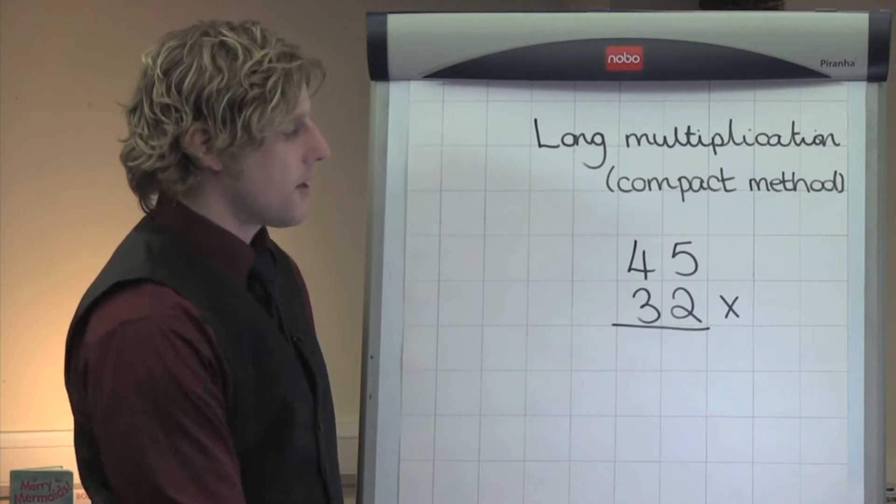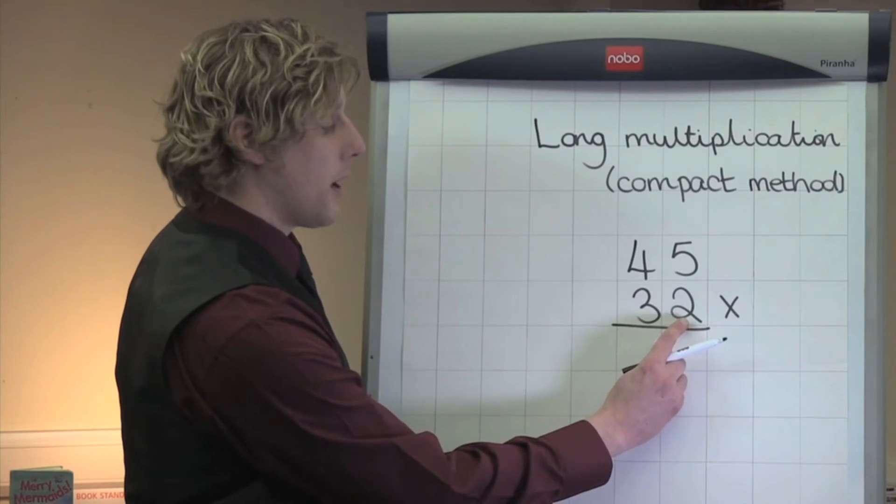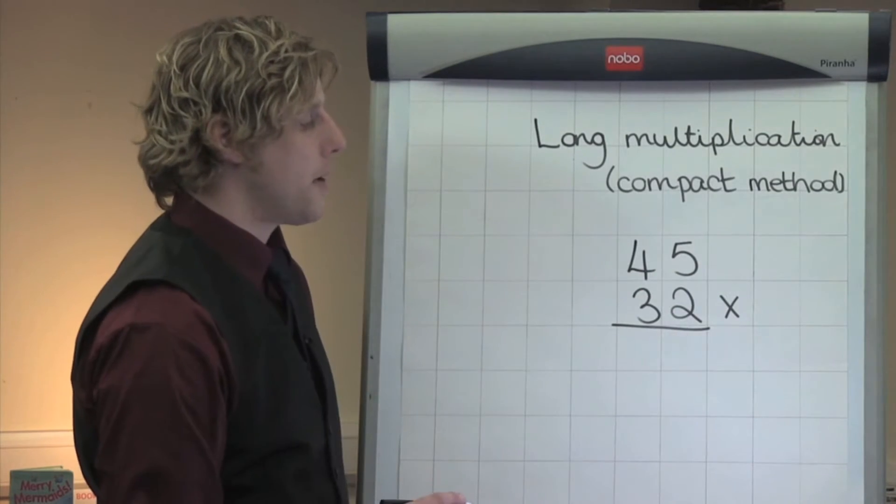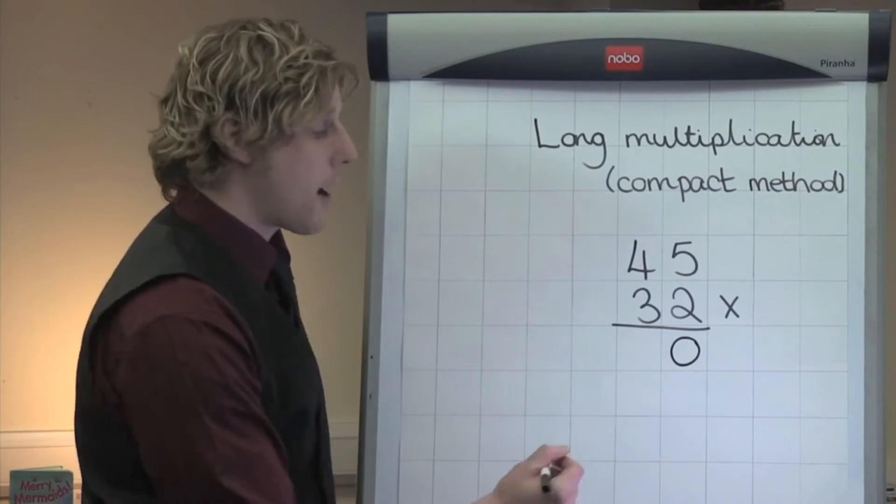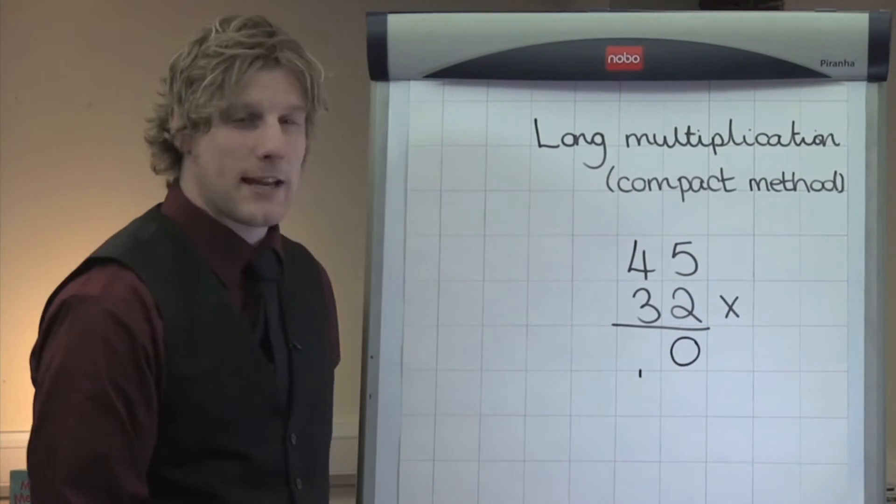To answer this, I'm starting with my two units and I multiply 2 by the 5 above. 2 times 5 is 10, so I write my 0 and I carry 1 across. That stands for 110.